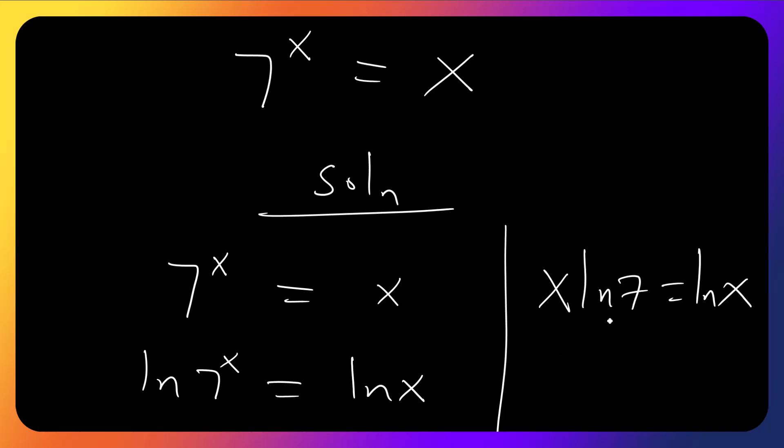Now let's group x on one side. I will divide both sides by x. This one will cancel. So I have ln 7 equals ln x over x.